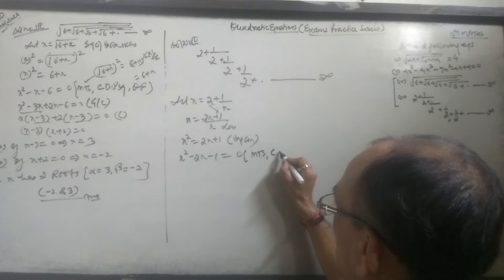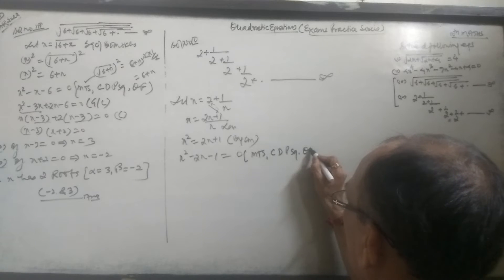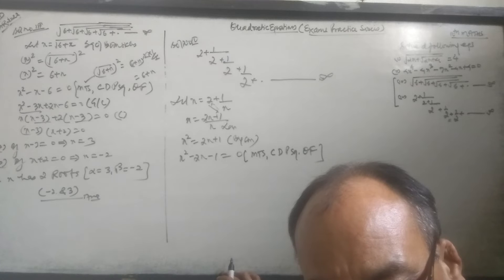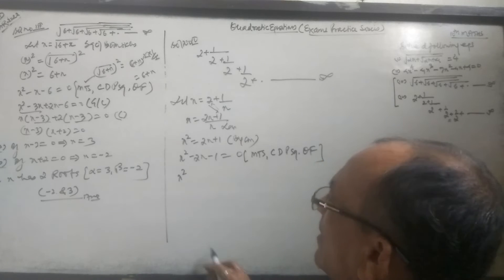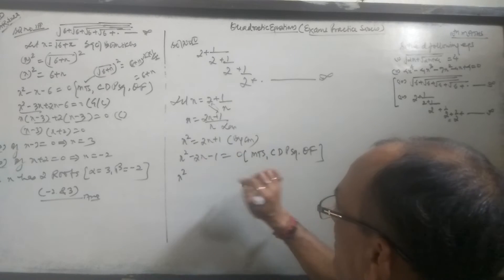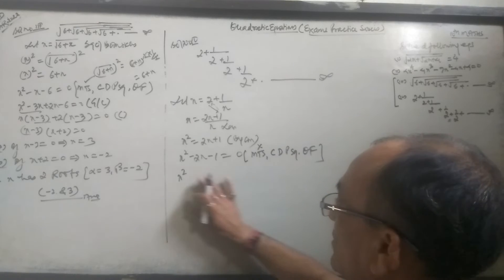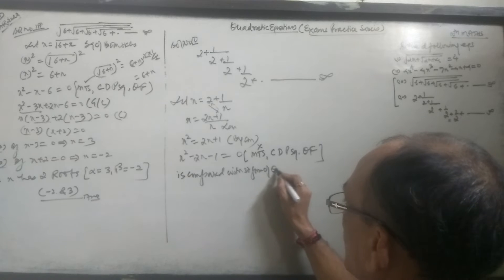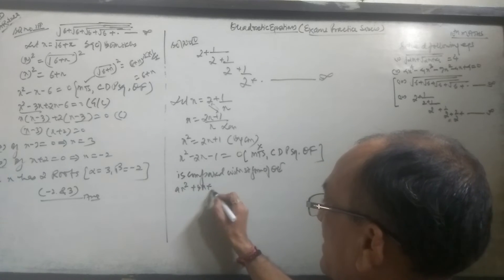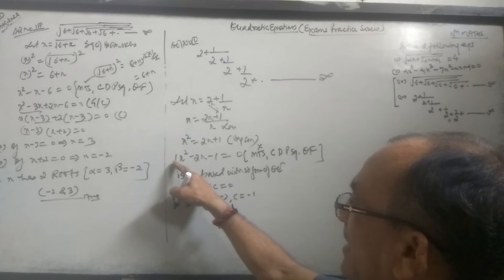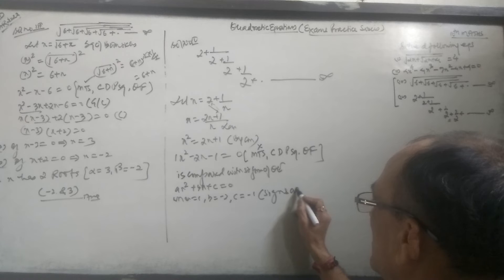For the formula: middle term splitting or use the discriminant. Compared with standard form of quadratic equation aX² + bX + C = 0, where a = 1, b = -2, C = -1. Signs are important.